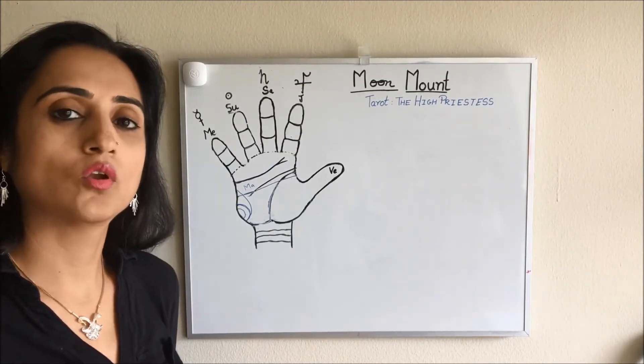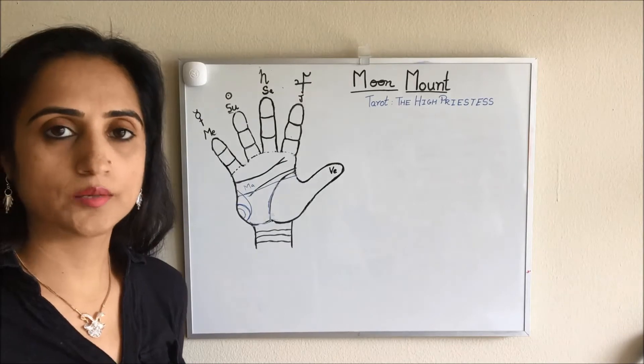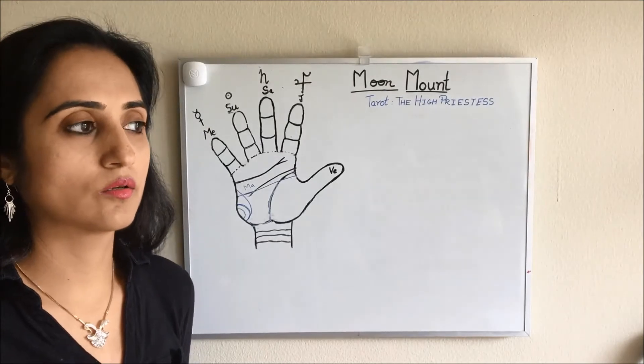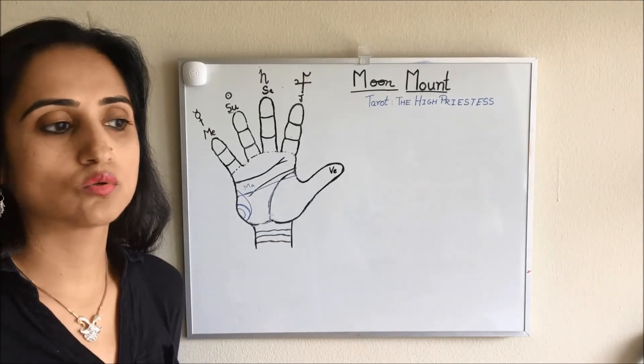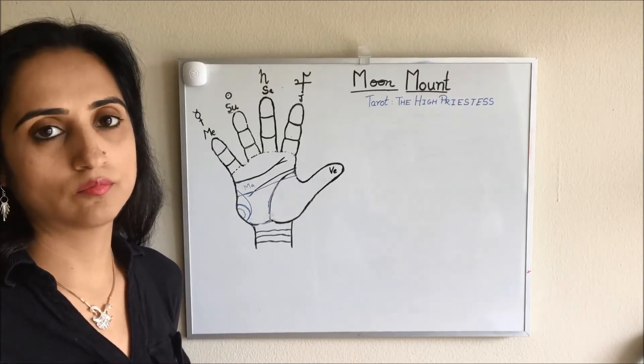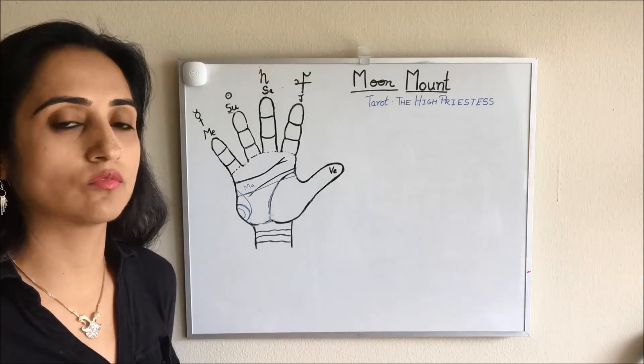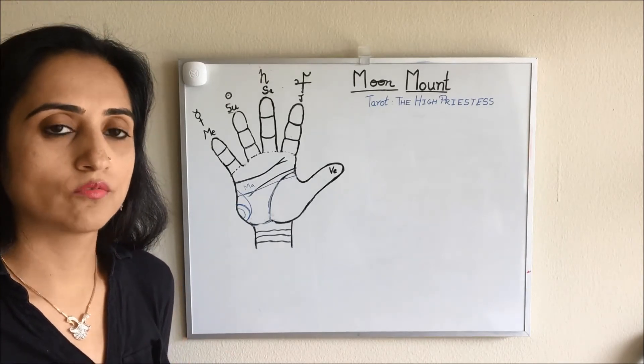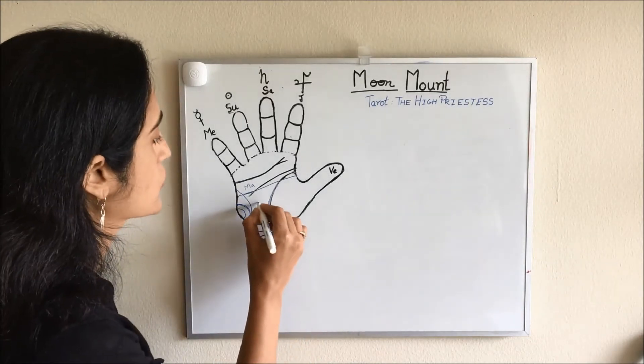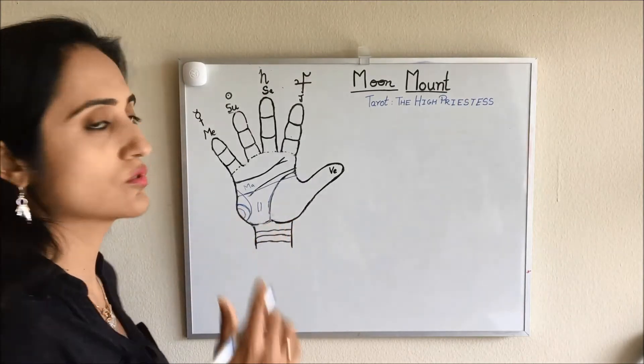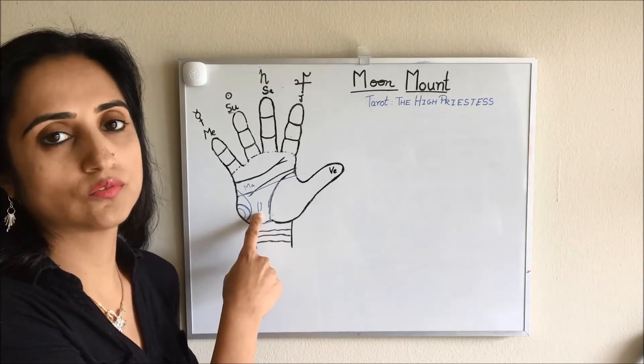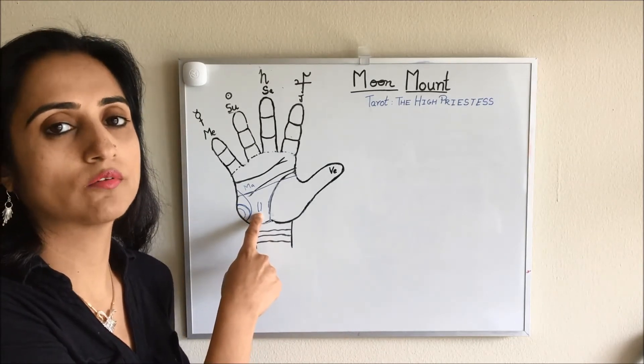If a person has a moon ring, then the person can have knowledge of various scriptures and whatever they say will come true. They have a power of prediction. Whatever they say from their mouth will become true. Even if we have two vertical lines over here, that shows the same thing. They have good knowledge of scriptures and whatever they say becomes true in anyone's life.